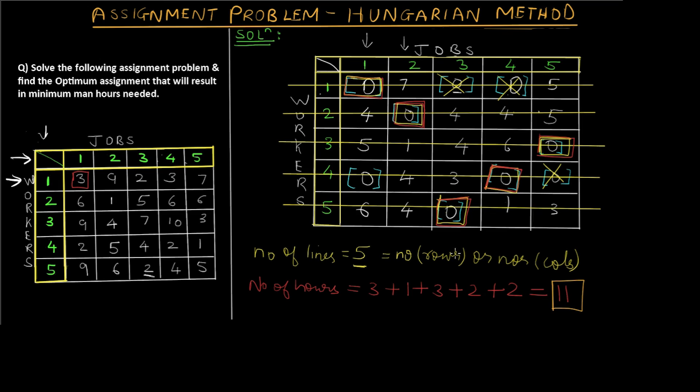In the next video tutorial we'll see a variation of this method where the number of lines is not equal to the number of rows, and we'll see what to do in that case. I hope you understood the concept of the Hungarian method and how to solve the assignment problem. If you liked this video, give it a thumbs up and don't forget to subscribe. Peace!